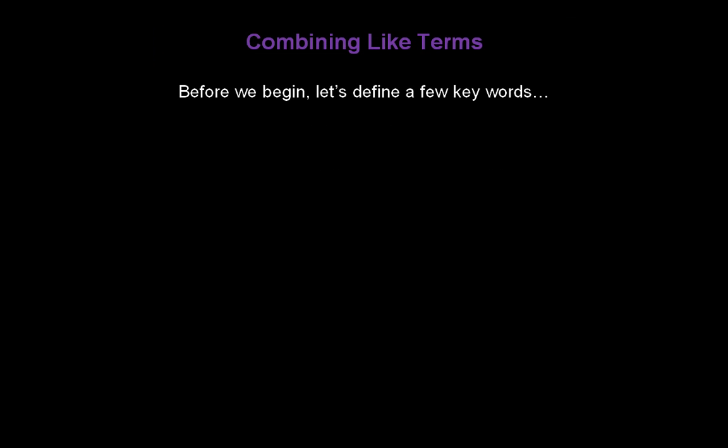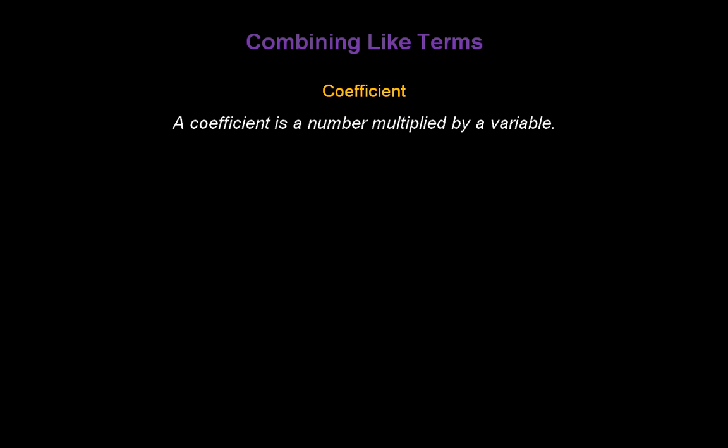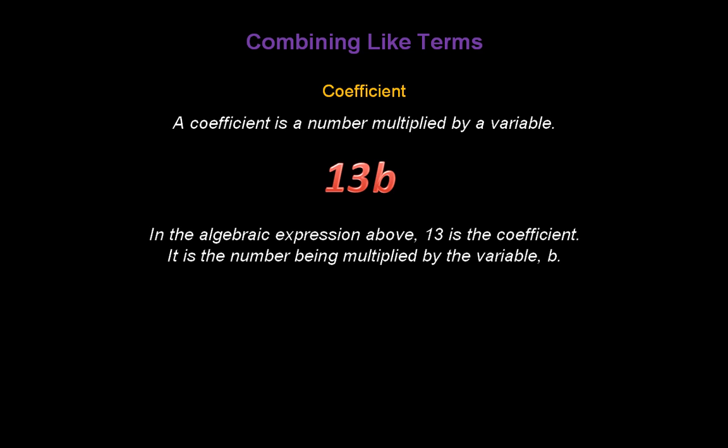Now before we begin, let's define a few key words. The word variable — a variable is just a letter that represents a number whose value can change or vary. The word coefficient — a coefficient is a number multiplied by a variable. In the algebraic expression 13b, 13 is the coefficient; it's the number being multiplied by the variable b.